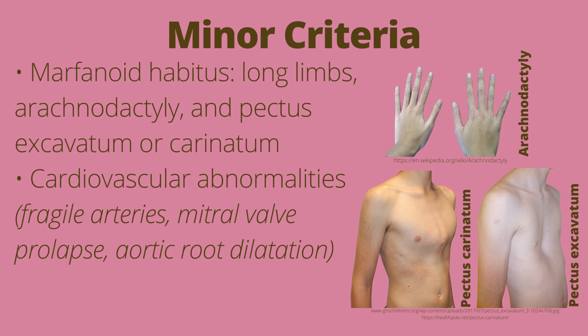The final minor criteria include marfanoid habitus, which consists of long limbs, arachnodactyly, and pectus excavatum or carinatum. Arachnodactyly is long, slender fingers. Pectus carinatum is a protruding chest as seen on the right image, and pectus excavatum is a sunken chest.